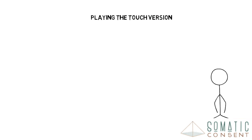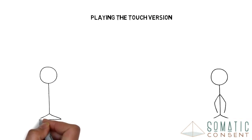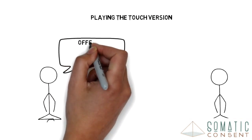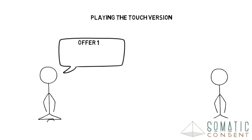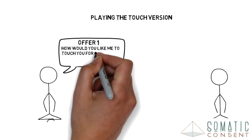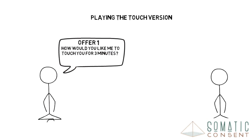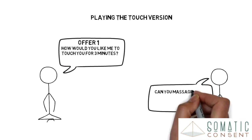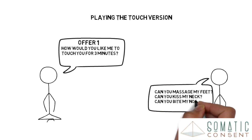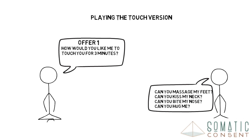The 3-minute game contains two questions, where each is an offer. Offer 1: How would you like me to touch you for 3 minutes? Can you massage my feet, kiss my neck, bite my nose, or hug me, and so on.